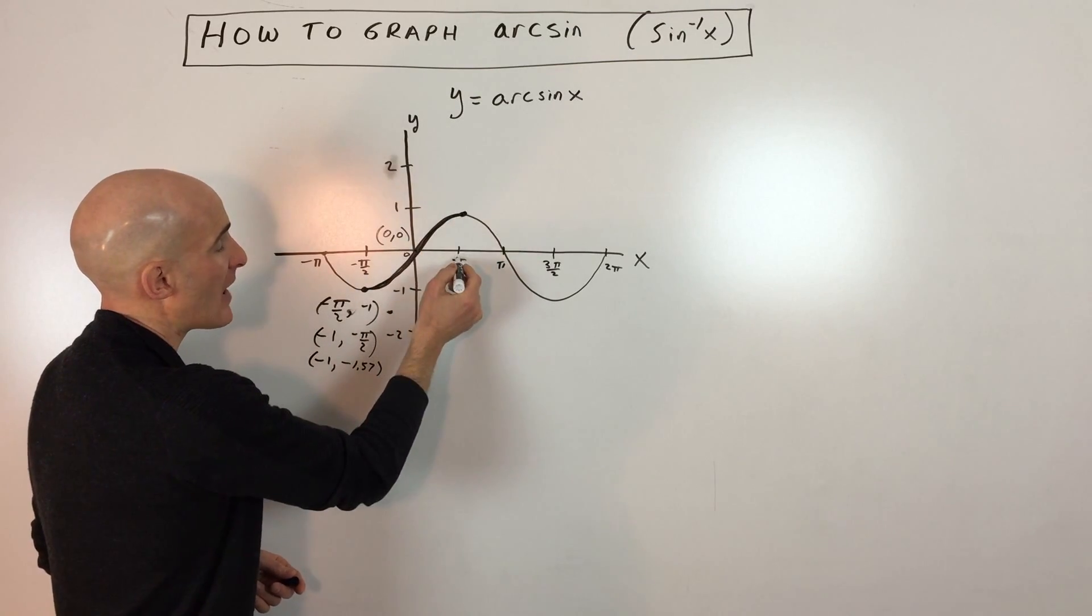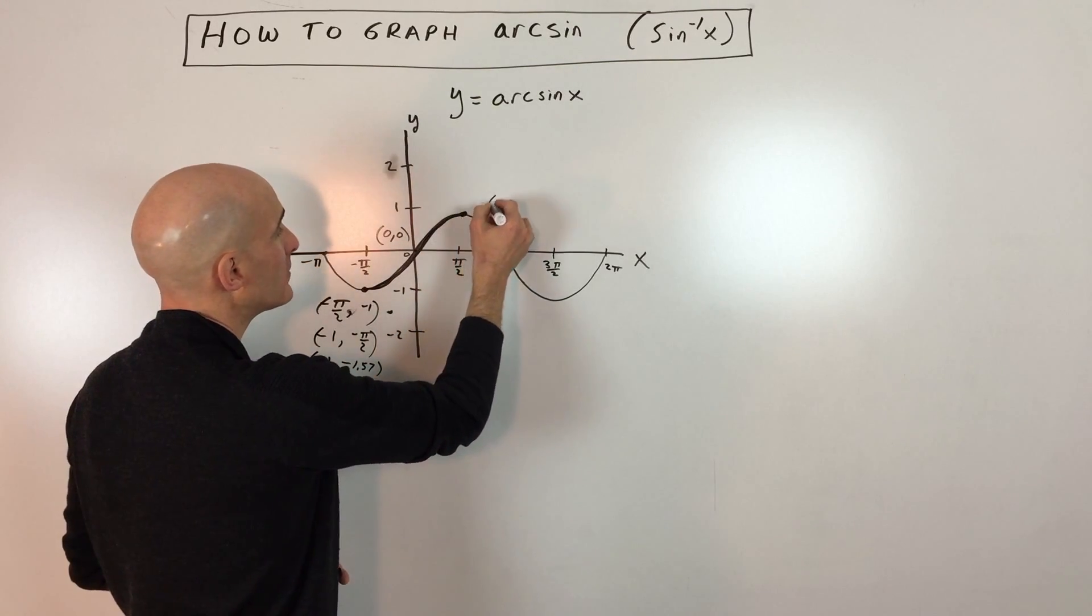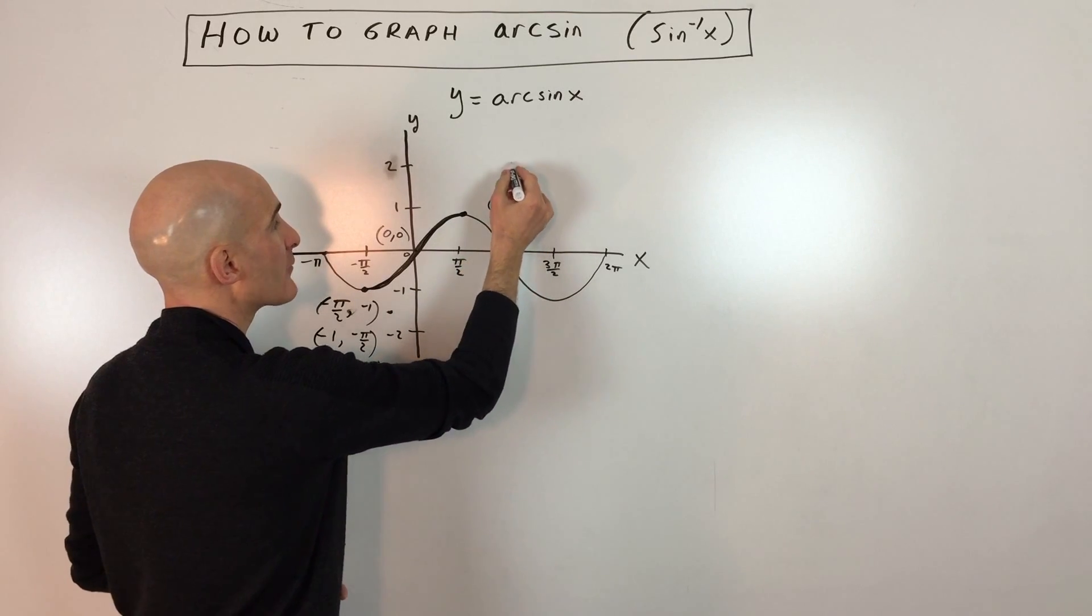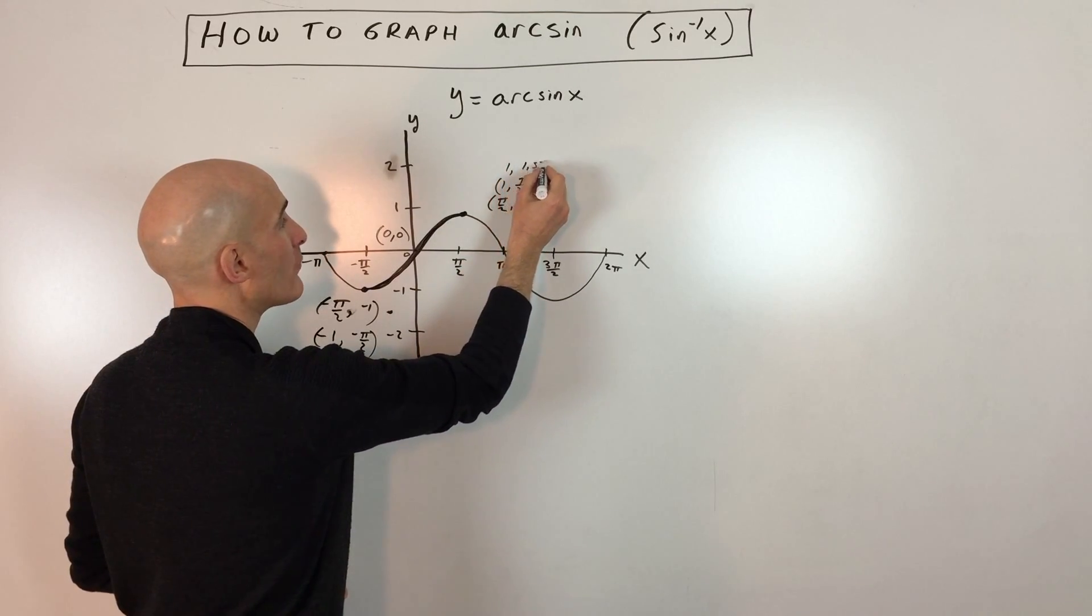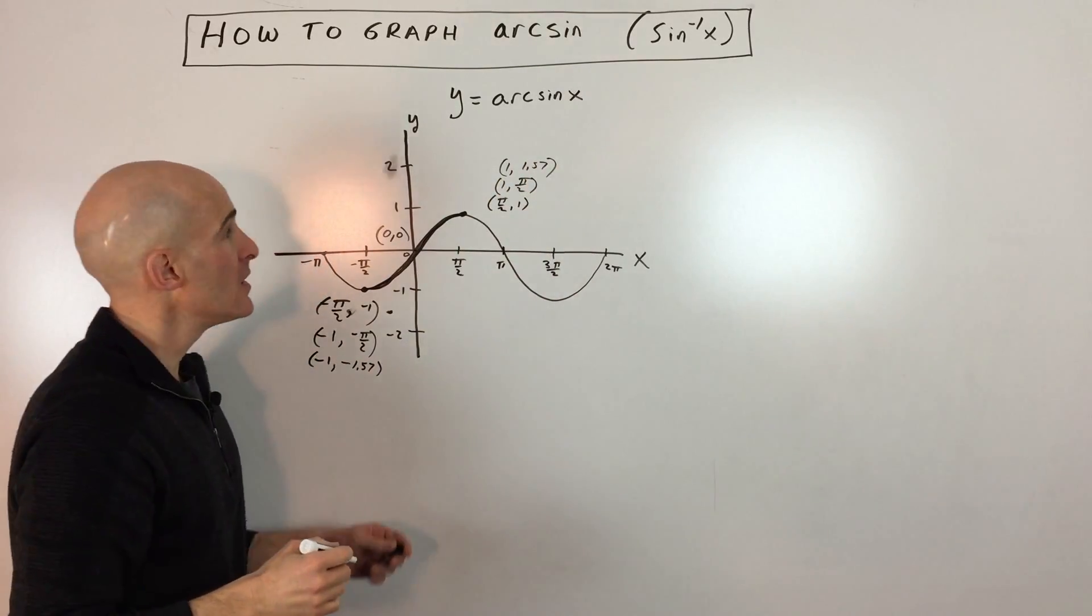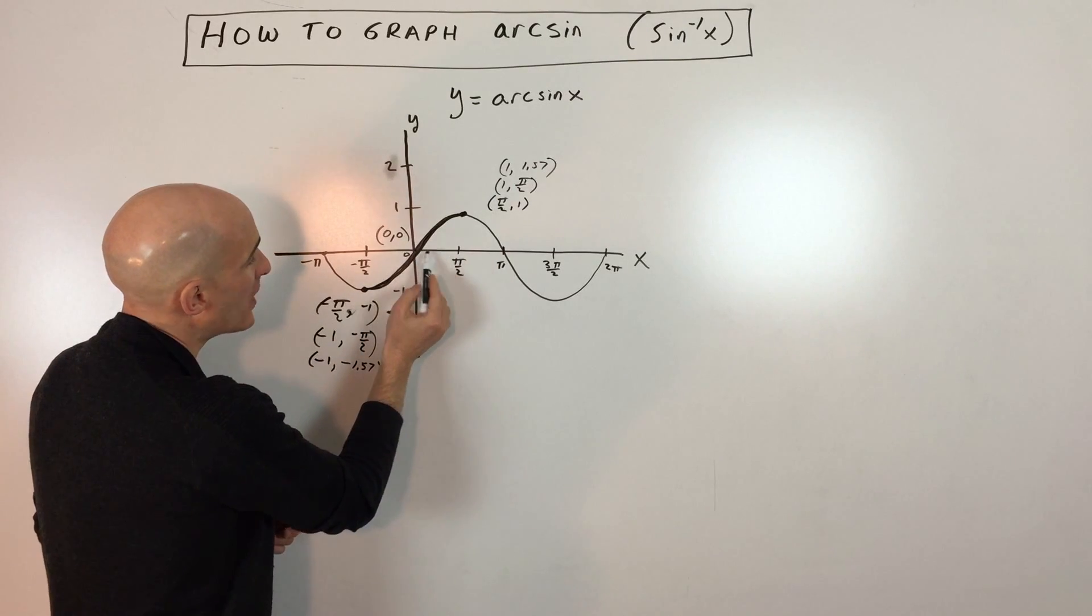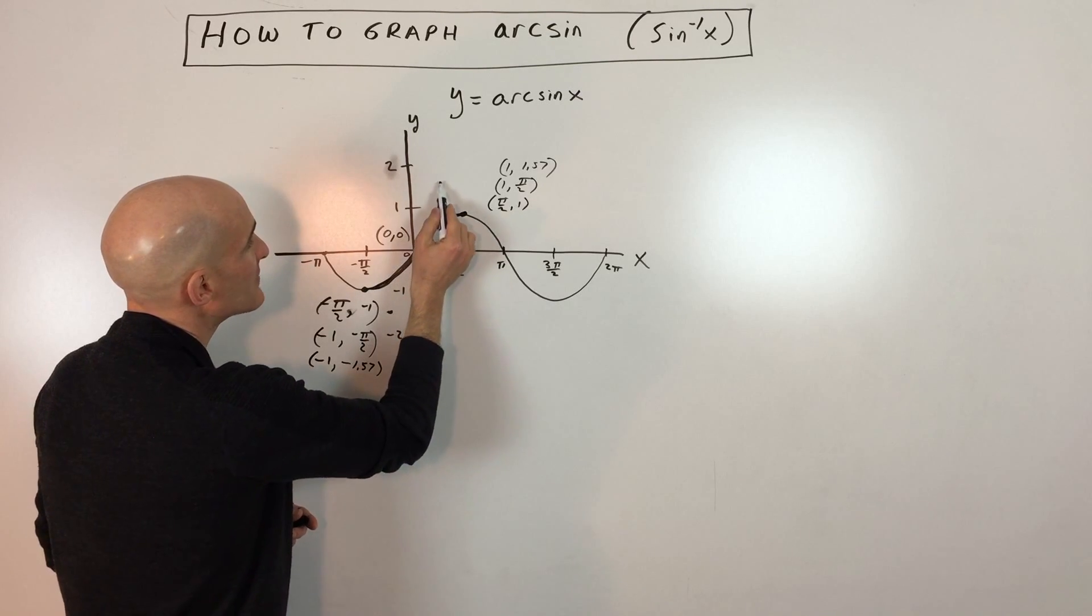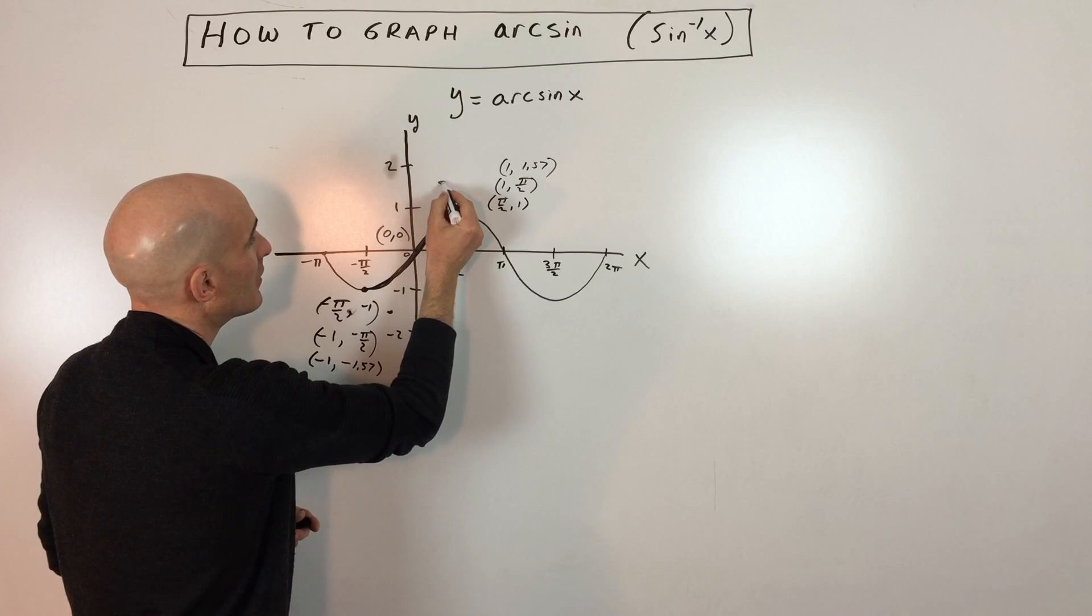And then this other point, π over 2 comma 1, let's mark that one down. If we switch the x and the y, we get 1 comma π over 2. Again, π over 2 is about 1.57. So we're going to graph that point. 1 is going to be right about here, this is about two-thirds of the way, and then we're going to go up 1.57, which is right about there.